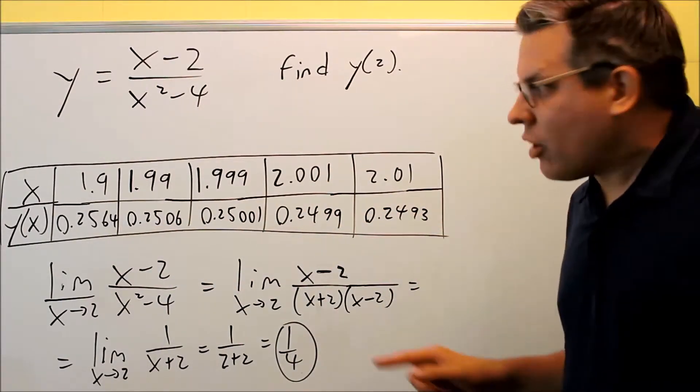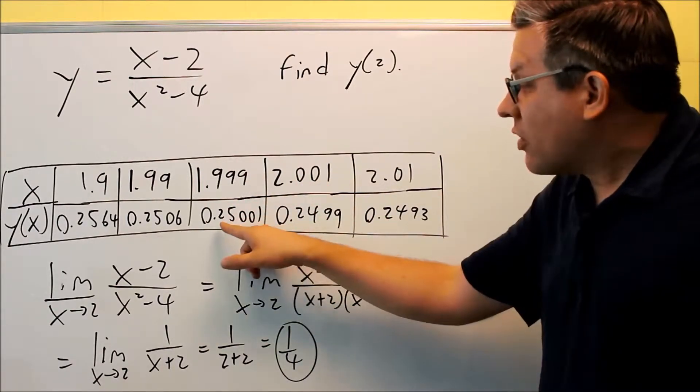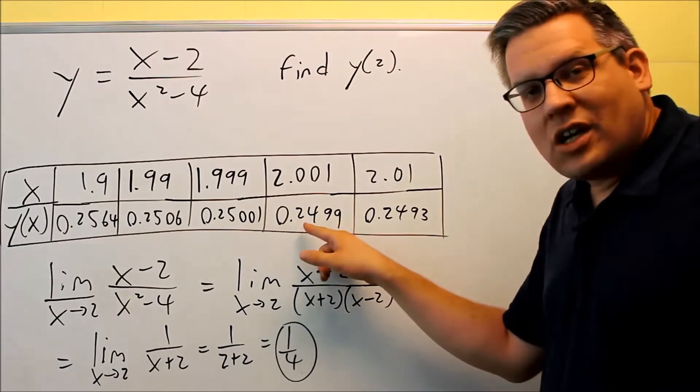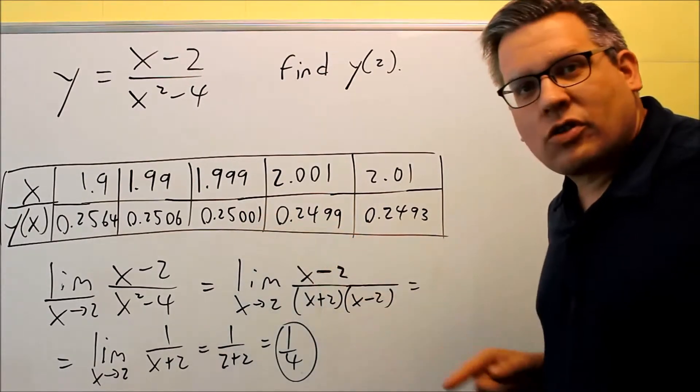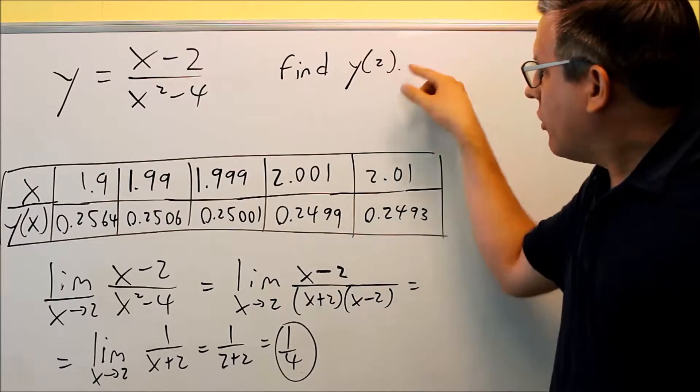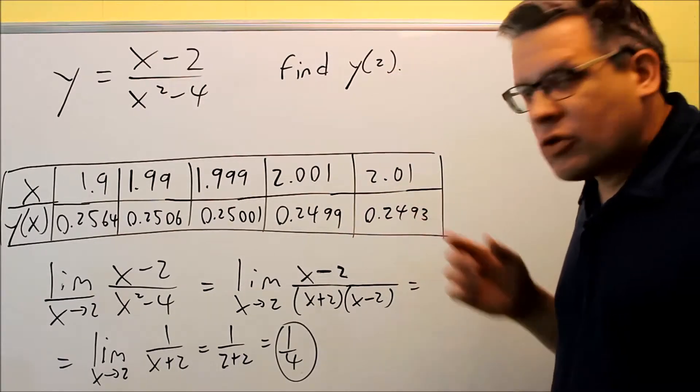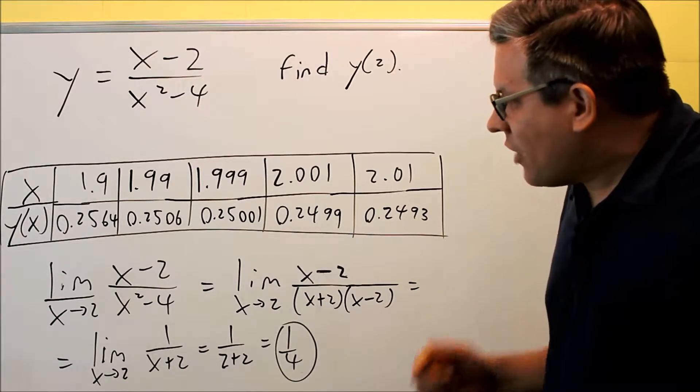So we can see that as we get closer and closer to 2, we have more decimal points here. You notice that the actual value itself is approaching roughly, looks like 0.25, which means that around the value, the x value of 2, the y value itself is going to be close to 0.25.